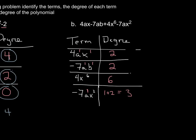Looking at all the degrees — 2, 2, 6, and 3 — we take the highest of any of those. We have a degree of 6 from the term 4x to the sixth, so the degree of this polynomial is 6.